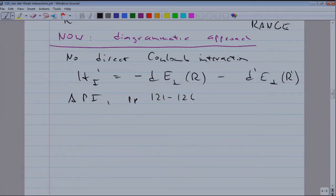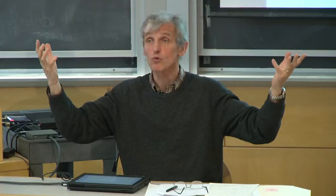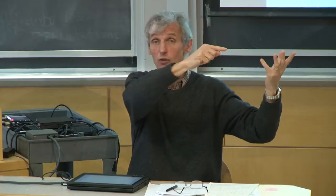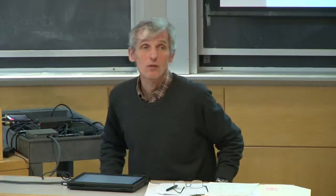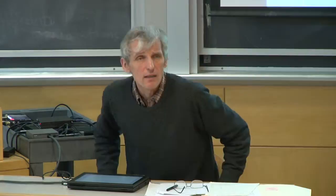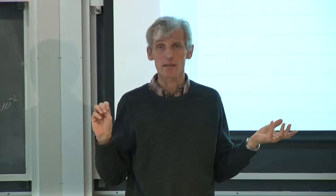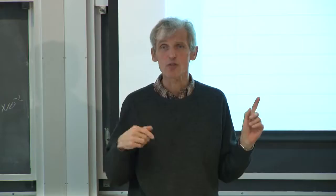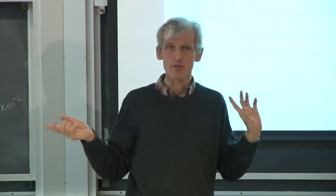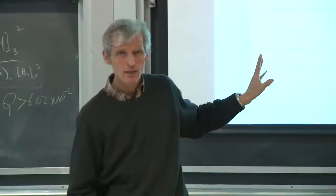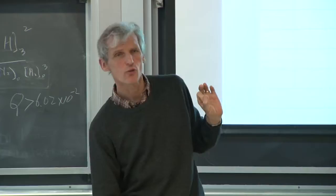The only way two neutral objects can interact is through the radiation field, meaning they have to emit photons. The Van der Waals interaction can be thought of as one atom emitting a photon, and this virtual photon is absorbed by the other atom, and vice versa. You may have heard that many interactions in physics are mediated by the exchange of virtual particles — the famous example is that the nuclear force comes from virtual exchange of pions. The Coulomb force also comes from virtual exchange of photons. I'm proud to show you the basic outline of how virtual exchange of photons between two neutral atoms leads to the Van der Waals potential.